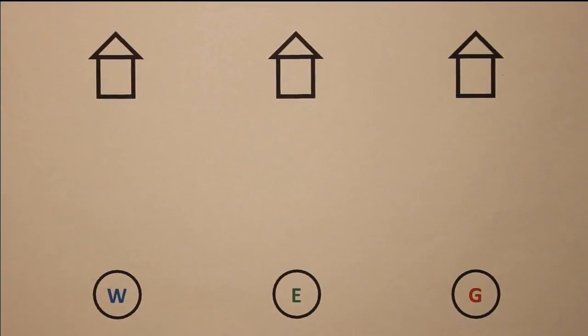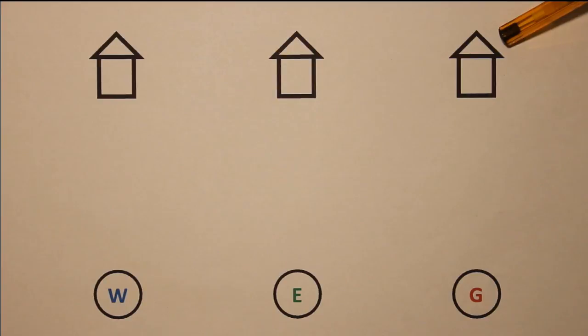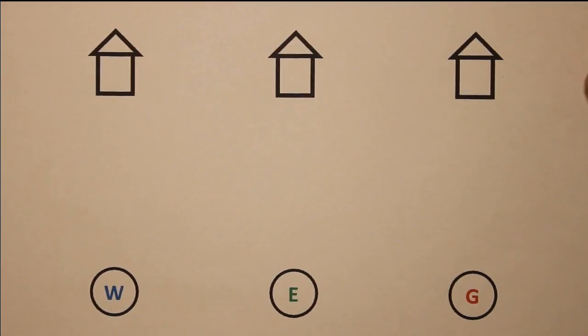Hi. Today in this video we will be exploring the supposedly impossible puzzle in which you have to connect three utilities to each of these three houses without any lines intersecting each other.